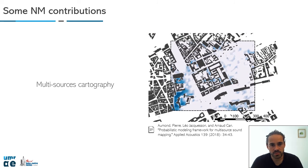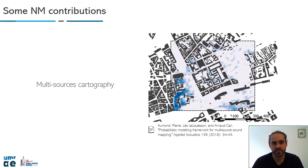Guillermo Quintero also did the coupling with the SUMO software, and this year we are doing it with MATSim. With noise modeling, we also propose a probabilistic modeling framework for multisource sound mapping. On this map, you can find the probability of hearing voices in a neighborhood of Nantes in France — specifically the probability that the sound level of voices is higher than that of cars. For more information, you can refer to the associated paper.